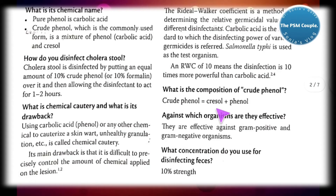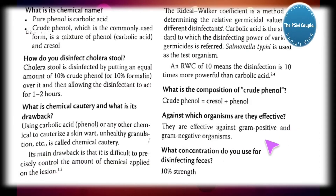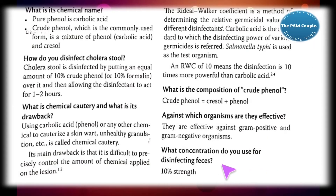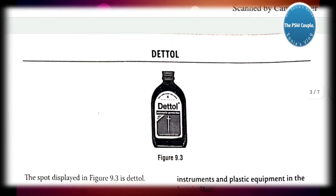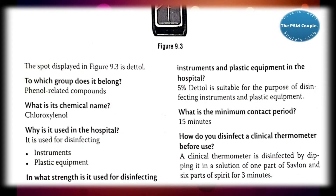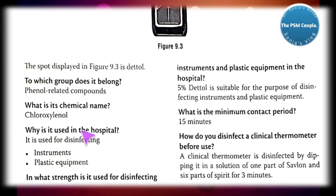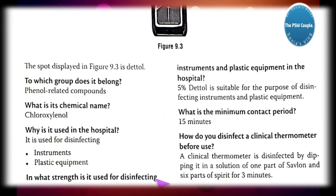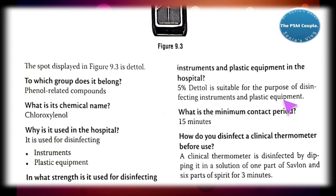The composition of crude phenol is cresol plus phenol. They are effective against both gram-positive and gram-negative organisms. For disinfecting feces, 10% strength is used. Next is Dettol — it belongs to the phenol-related compound group. Its chemical name is chloroxylenol. It is used in the hospital for disinfecting instruments and plastic equipment at 5% strength, with a minimum contact period of 15 minutes.